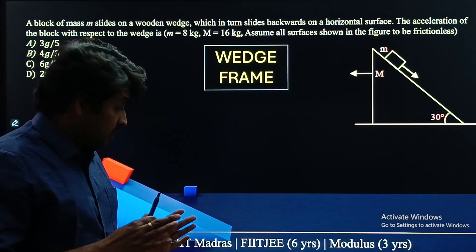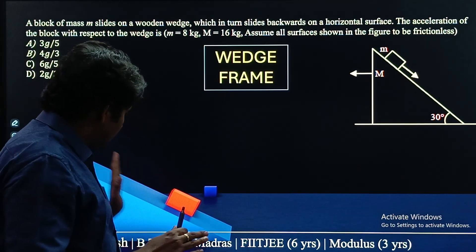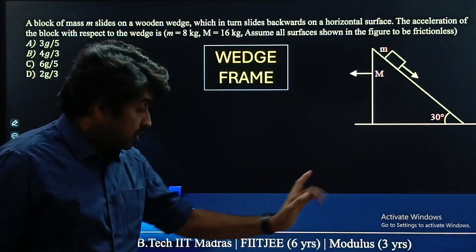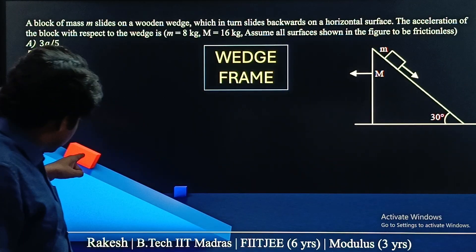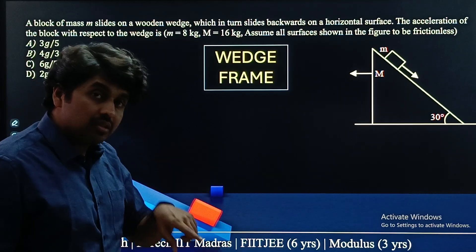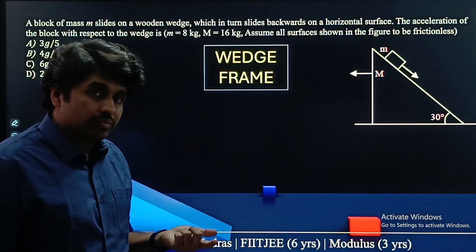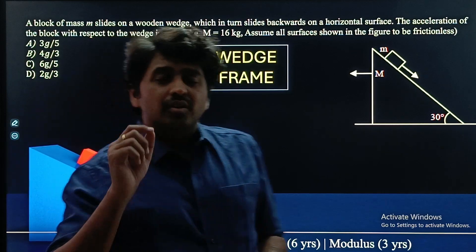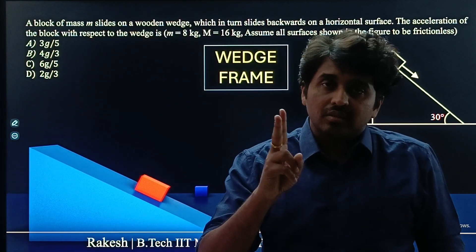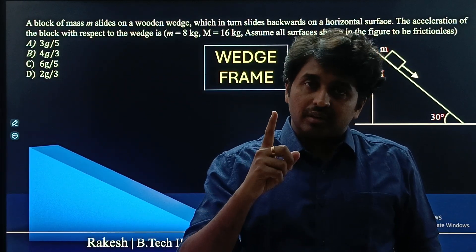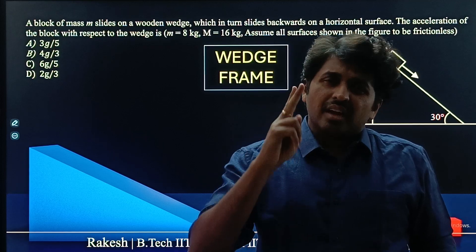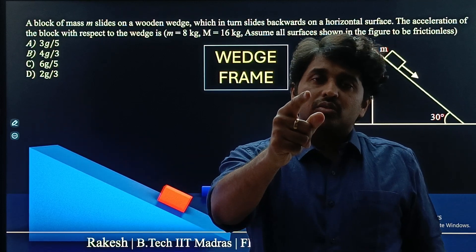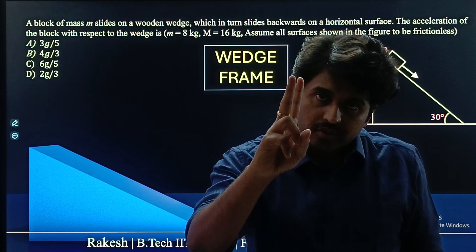With respect to the wedge, the block is sliding down and the ground is moving that side. The acceleration you are seeing now is what is being asked in the question. We will give you two methods: the first is the standard method, and the second is the awesome solution where you can complete this in just two steps.